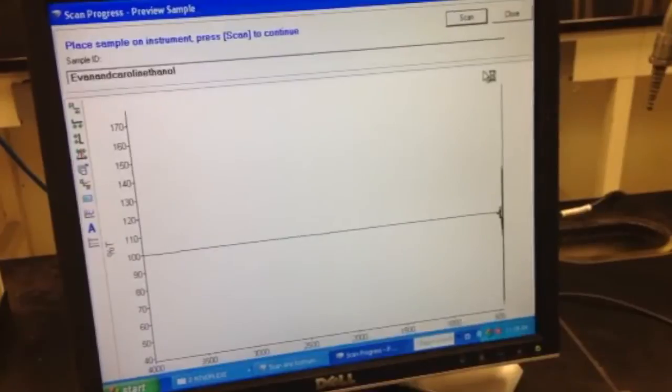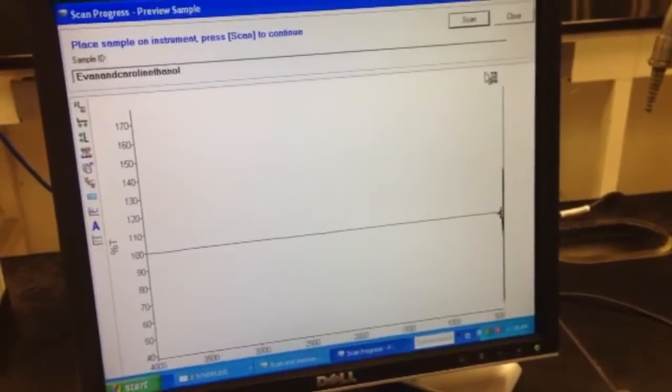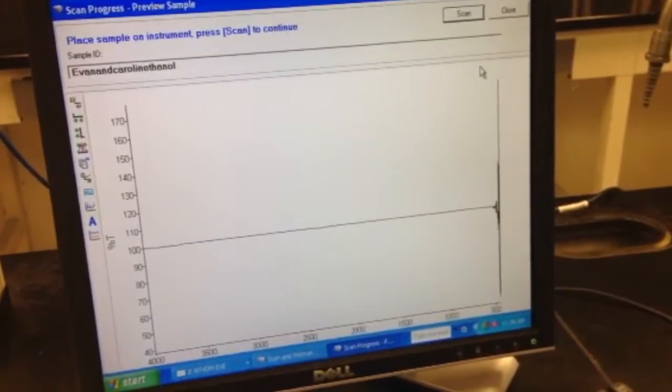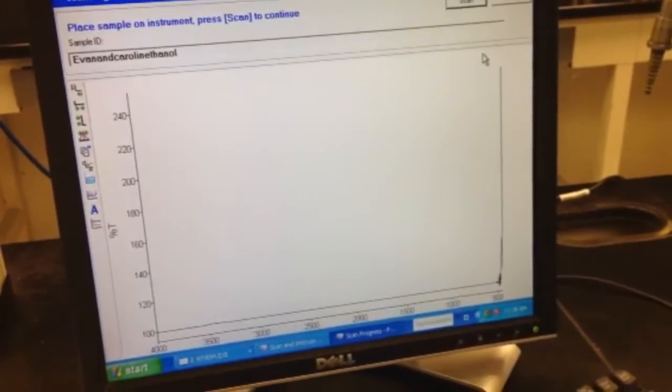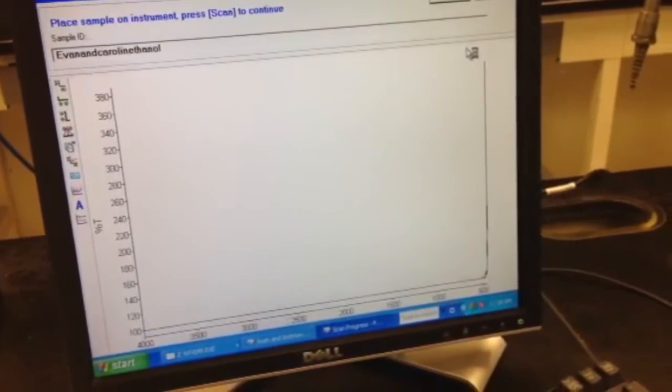As you can see, the graph starts to appear and it's going to fluctuate a little bit. Once it slows down, then it's safe to go on to the next step once it pretty much remains constant.